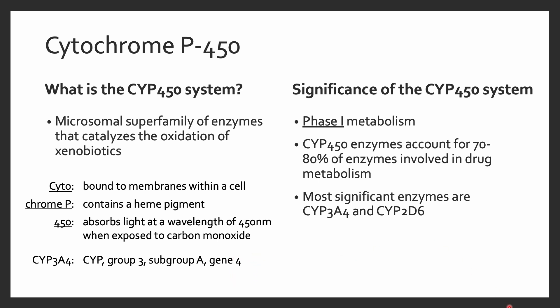Cytochrome P450 is thought to be the most clinically important of the phase one metabolizing processes. Humans have approximately 60 cytochrome P450 genes, accounting for about three-fourths of enzymes involved in drug metabolism. The most clinically significant are cytochrome P450 3A4 and CYP2D6.